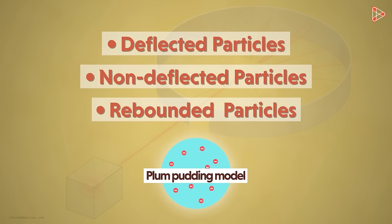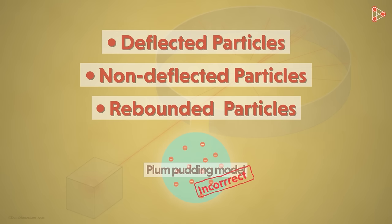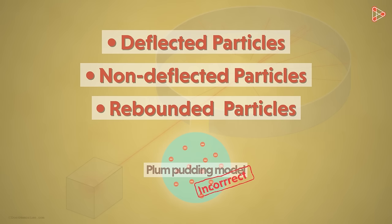Now, how can this be possible? These three observations made Rutherford think that the plum pudding model is not really correct. Based on the conclusions he had, he put forward the new hypothesis explaining the structure of atoms. What were his conclusions? Let us have a look at the conclusions by Rutherford followed by the new atomic model put forth by him in the next video.